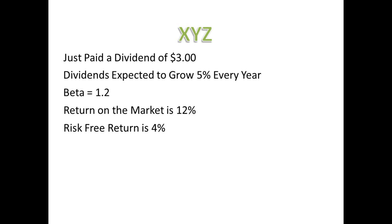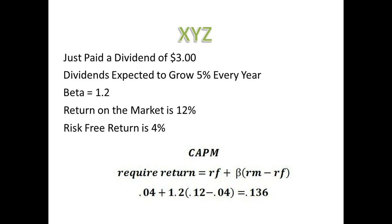First, we would figure out the discount rate, which is the required rate of return, by using the Capital Asset Pricing Model. Then, we would plug the discount rate, along with other given figures, into the Constant Growth Dividend Discount Model.